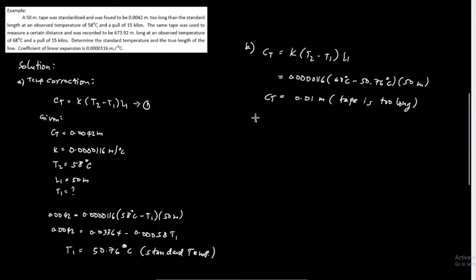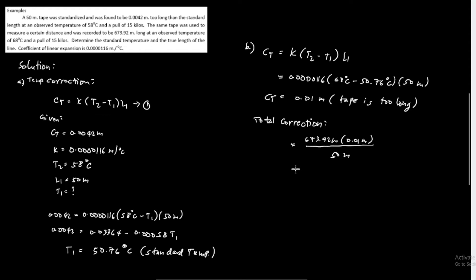For the total correction: the recorded length of 673.92 meters multiplied by the temperature correction of 0.01 meter, divided by the standard tape length of 50 meters, gives a total correction equal to 0.1348 meter.